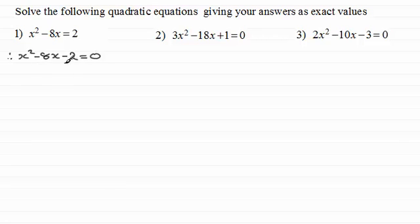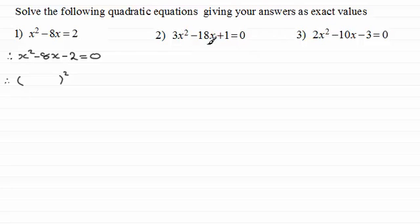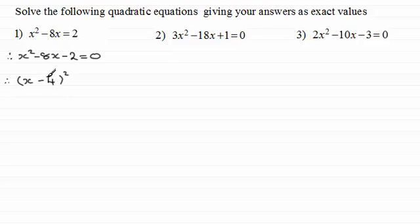Next we need to complete the square across the first two terms — I'm assuming you're familiar with completing the square; if not, do check out my earlier videos on that. We start with a bracket squared. Since it's 1x squared we can do this directly. We take x and halve the coefficient of x: half of minus 8 is minus 4. Squaring that bracket gives x squared minus 8x plus 16, so we subtract 16 to get just x squared minus 8x.